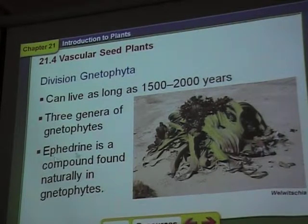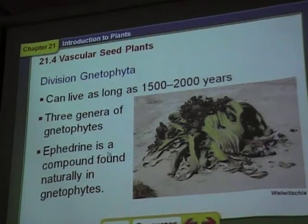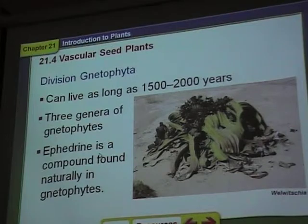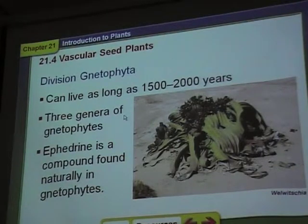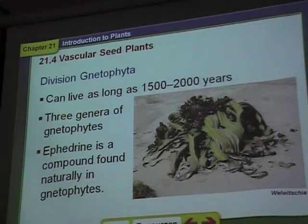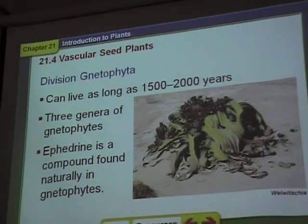Have you ever heard of ephedrine? It's a compound that's kind of like caffeine, and it's produced by some of these gnetophytes. There are three different genera of them: Ephedra is one, Gnetum is another, and Welwitschia is the other.